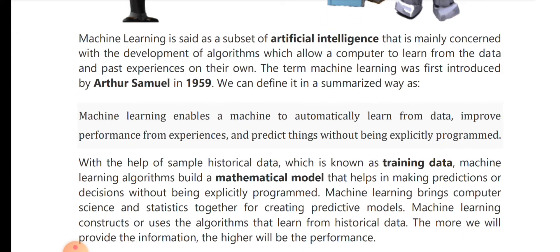Machine learning enables machines to automatically learn from data, improve performance, and learn from experience. They have to learn performance and learn data automatically. Without doing an explicit program — we don't have to explicitly code the data. This is what we call ML, or Machine Learning.